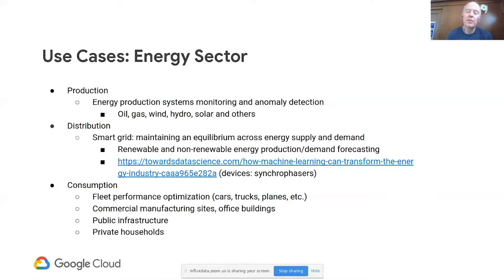The energy that has been harvested needs to be distributed. You have physical distribution, like in the oil and gas sector, where physical objects move like pipelines, cars, or trucks. Then you have the electricity smart grid, where the energy moves as electricity. The smart grid is a complex, highly interconnected system that needs to maintain equilibrium between supply and demand, requiring a lot of observation, forecasting, and monitoring over time.